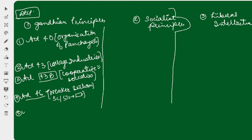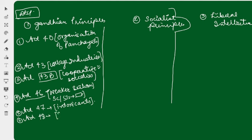Article 47 is related to prohibiting intoxicants — the consumption of drugs and drinks. Article 48 prohibits the slaughter of cows. So Article 36 to 51 in DPSP includes these articles under Gandhian principles.